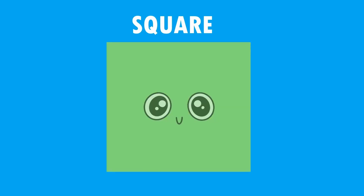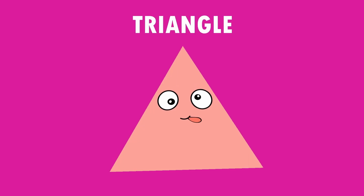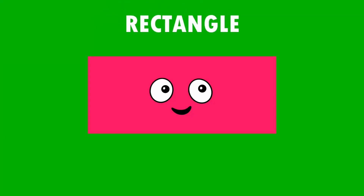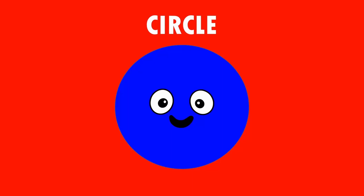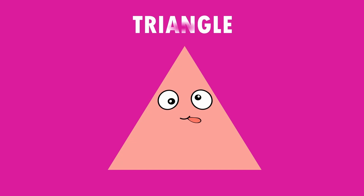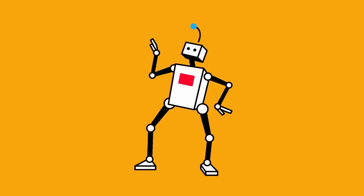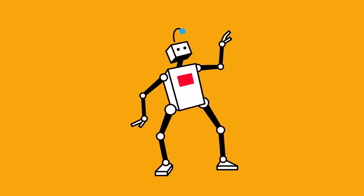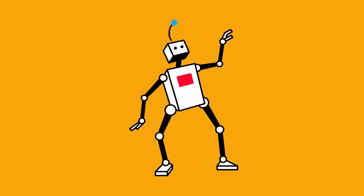Square. Circle. Triangle. Rectangle. Good job, my friends, on naming those shapes. Look at Shape Bob. He's doing his happy dance.